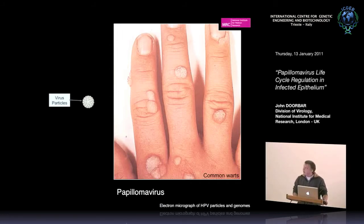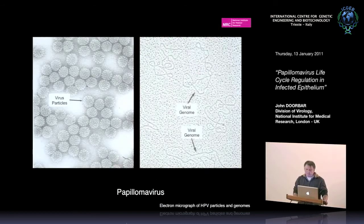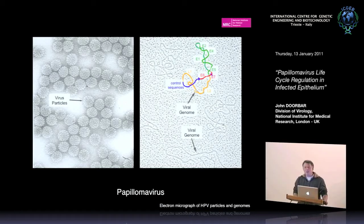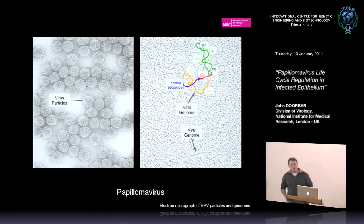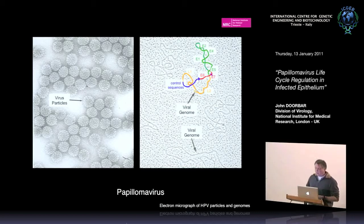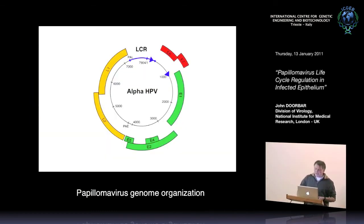Papillomaviruses are very small viruses — only 50 nanometres — and the viral genomes shown in the electron micrograph are episomal circles of 8,000 base pairs. Looking at the alpha papillomavirus genome organisation, they typically have a control sequence shown in blue and a range of genes. Some of these genes are familiar, such as E6 and E7, and the genes together are involved in taking over the epithelium following infection. I want to talk about this group of genes in particular — these are the ones which the alpha papillomaviruses have.